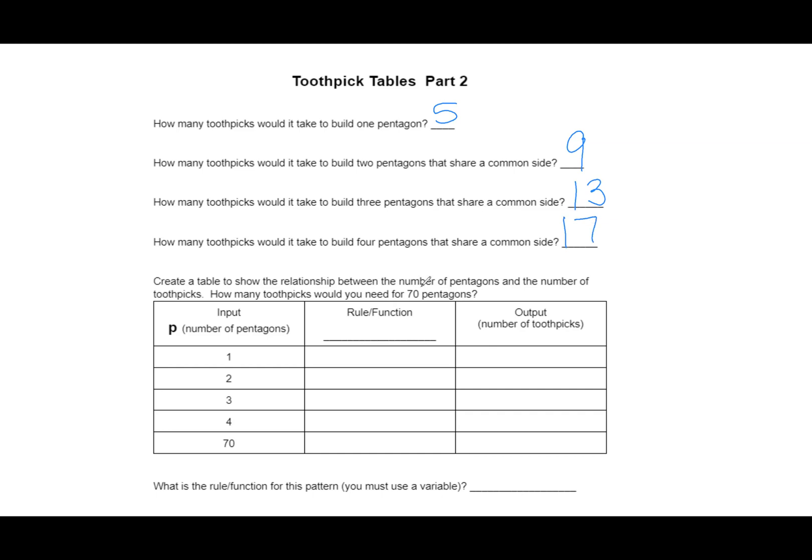Now, what if I asked you, how many toothpicks do you need for 70 pentagons? 70? Well, I don't want to sit and skip count by fours until I get to my 70th pentagon. There is a much easier, better way where we could, even if I asked you for 1,999,000 pentagons, how many toothpicks would you need? We can figure it out if we find the rule. For these types of problems, it can be a little tricky because the outputs, there is more than one thing happening here. To go from 1 to 5, there's a couple different things I could do. I could say, well, I multiplied by 5. Or maybe you could say 1 plus 4 would equal 5.